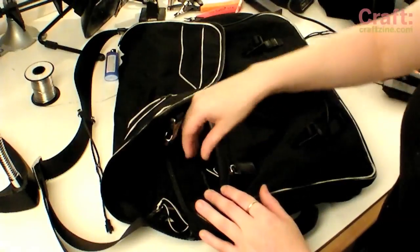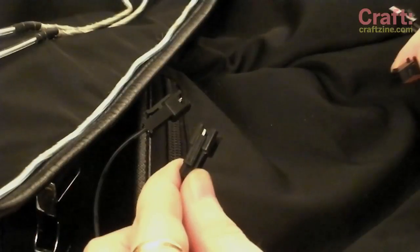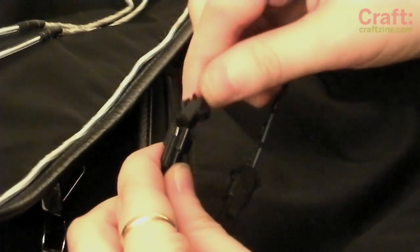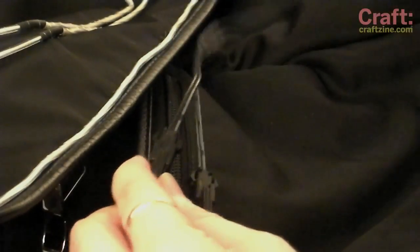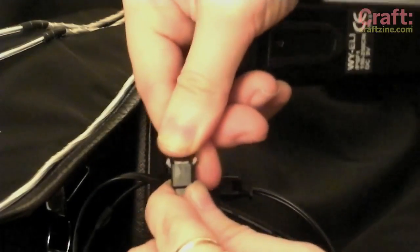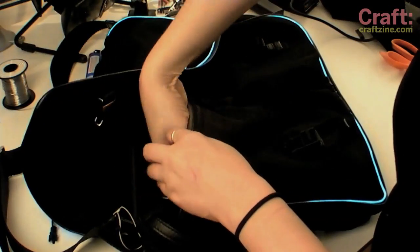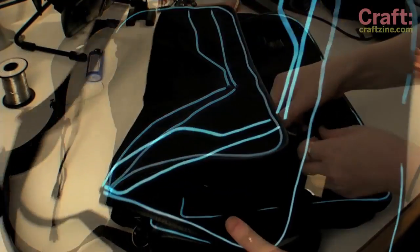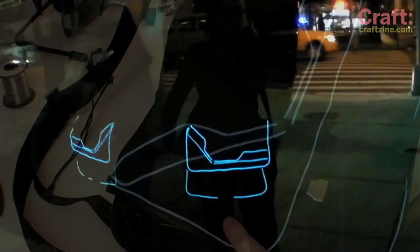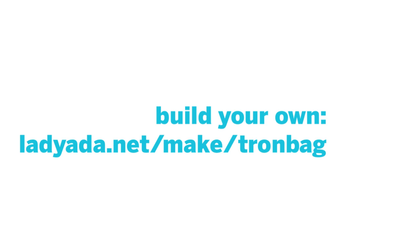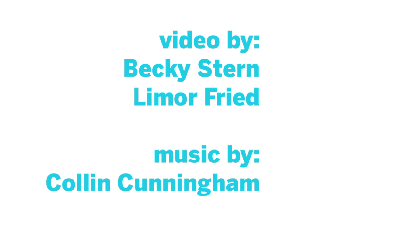We've finished sewing up all the EL and we've pulled the connectors out here. Now we're going to use our Y connector that we made to join the strands together, and then we'll be able to connect this to a single inverter. I'm going to tuck it into this pocket. And now we're done. We can take it to the premiere.